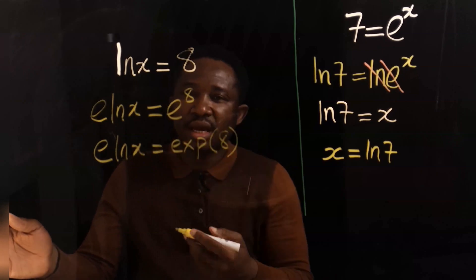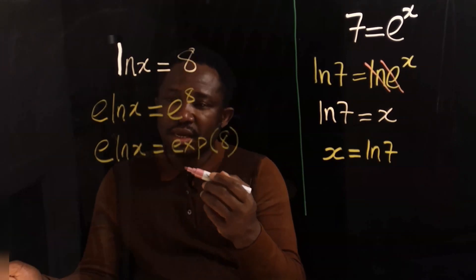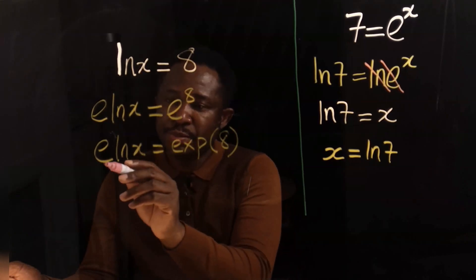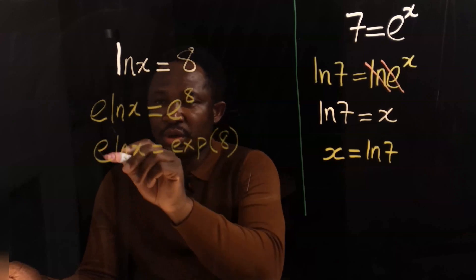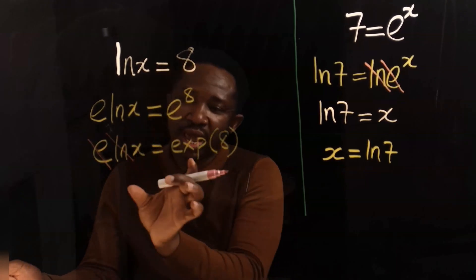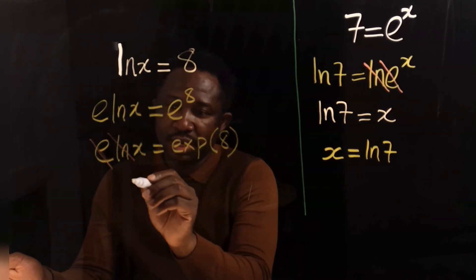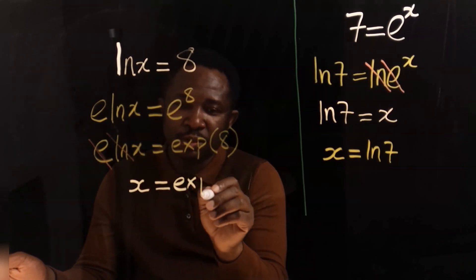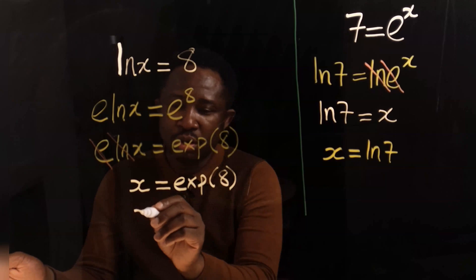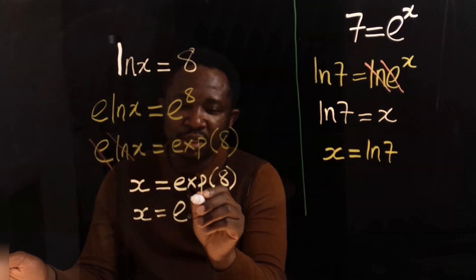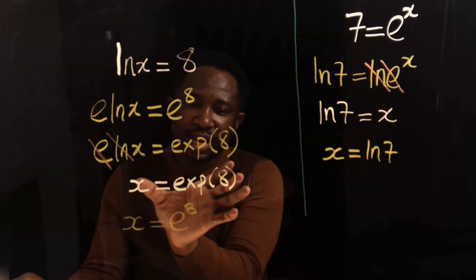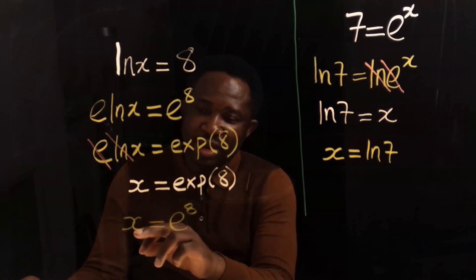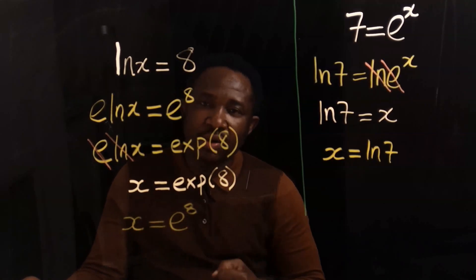Natural log placed very close to exponential, or exponential very close to natural log, neutralize each other. Here, x is now released and free. Our answer is x equals exponential 8, which can also be written as e to the power 8. Both forms are the same. We have made x the subject.